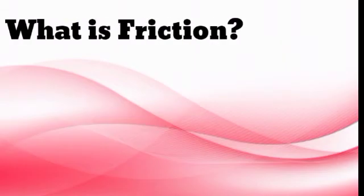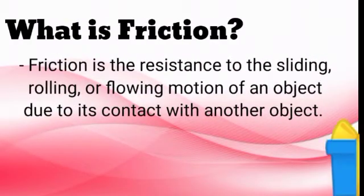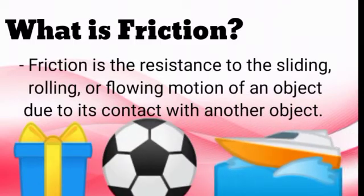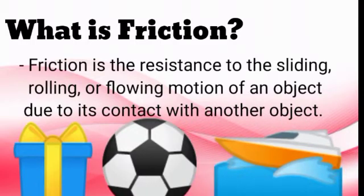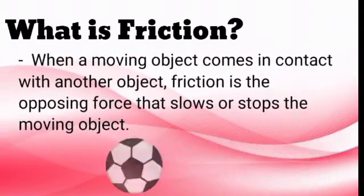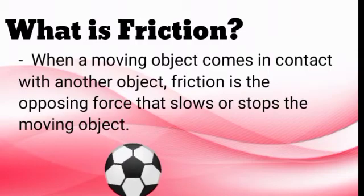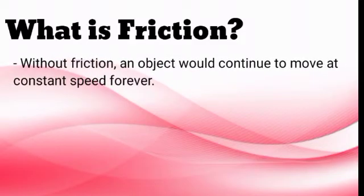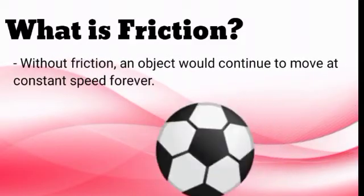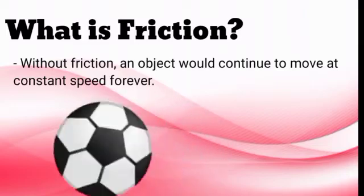What is friction? Friction is the resistance to the sliding, rolling, or flowing motion of an object due to its contact with another object. When a moving object comes in contact with another object, friction is the opposing force that slows or stops the moving object. Without friction, an object would continue to move at a constant speed forever.